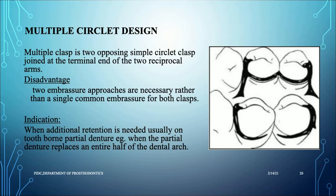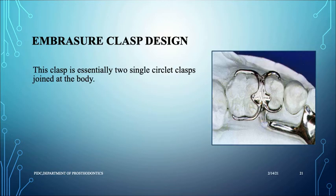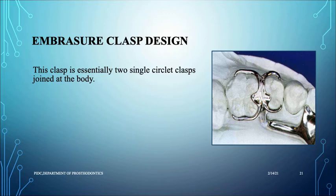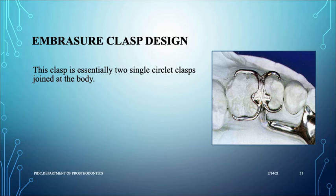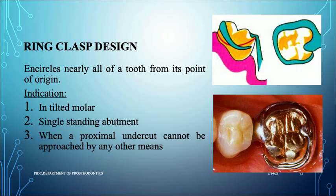The embrasure clasp essentially consists of two single circulate clasps joined together. The rest lies on the mesial and distal occlusal surfaces, and the retentive arms engage the undercuts. It is used when only one or two teeth are missing on one side of the mandible rather than half the arch, and you need some retention from the opposite side.